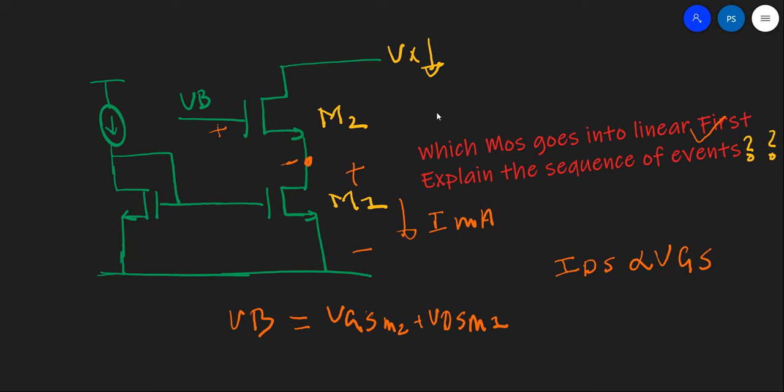Now the question does not end here. What will happen next and how does it happen? That will be very interesting to note. Now what has happened? Let us look at the second step. M2 is in linear now.